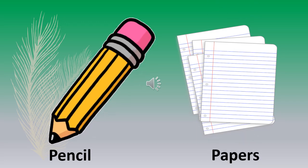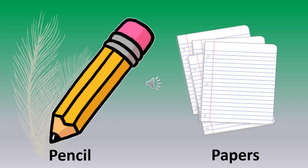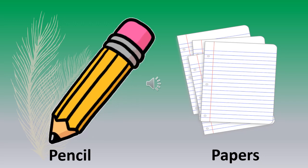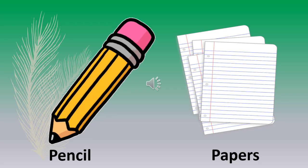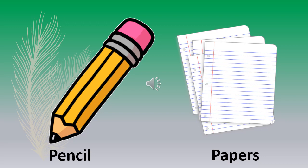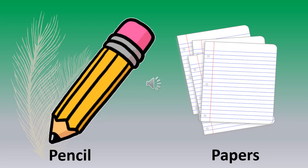What can you see in the picture? It's a pencil. Pencil. What is this? It's a papers. Papers.